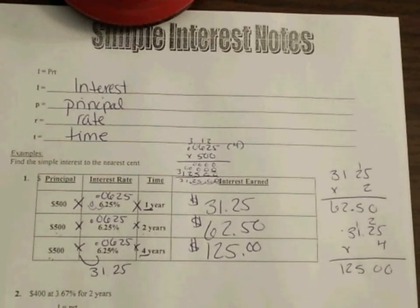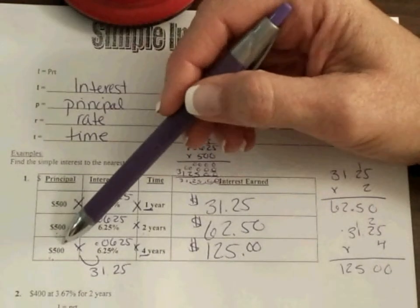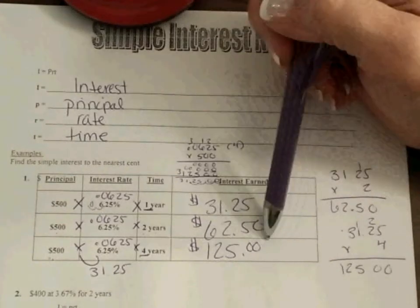Now, be sure you look at the question that they're asking, because sometimes they will ask how much interest was earned, and sometimes they will ask what your new total is. So if they ask you what your new total is, it's going to be this original that you started with, the $500, plus your $125. Correct. Right, Ms. Nelson? Yes.